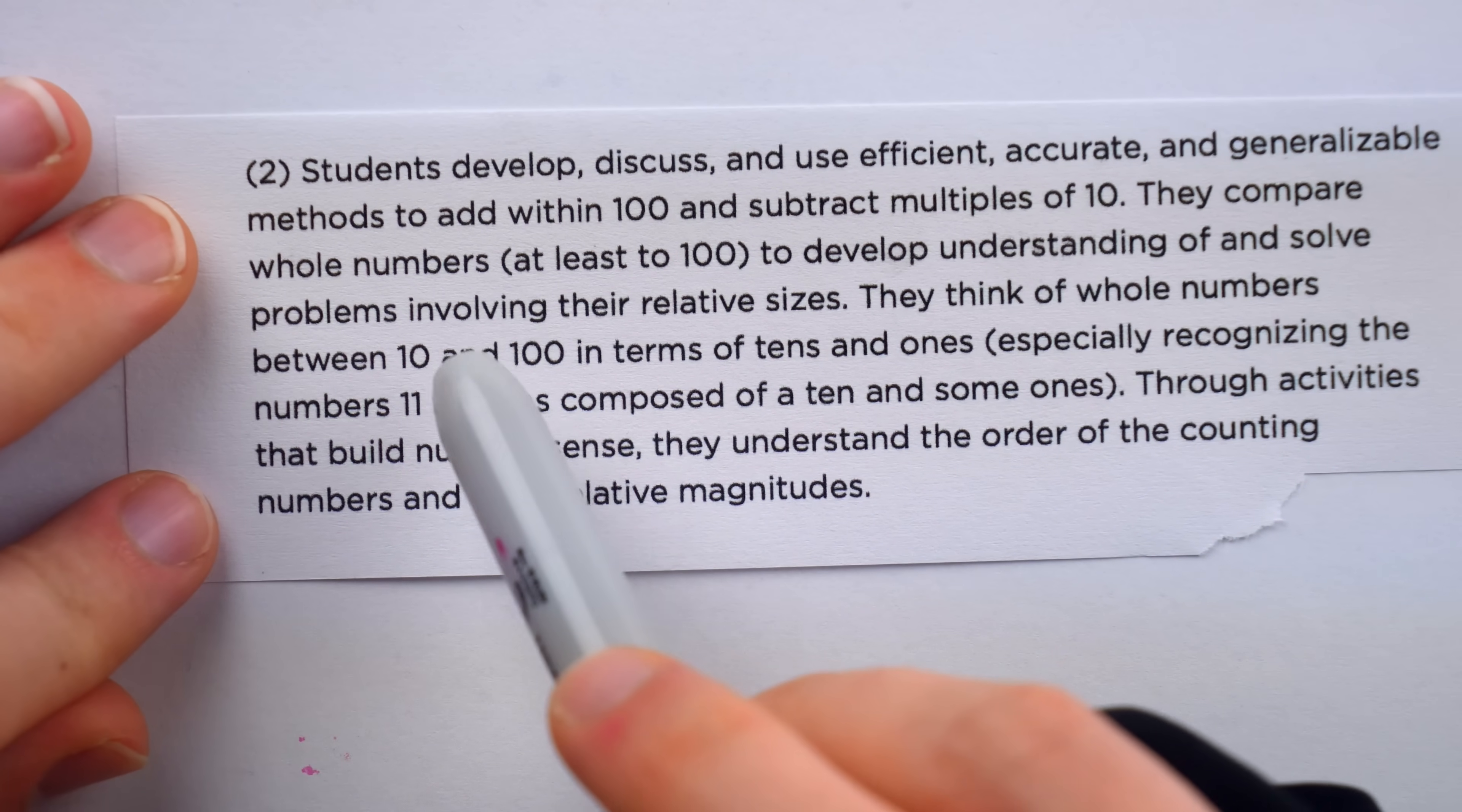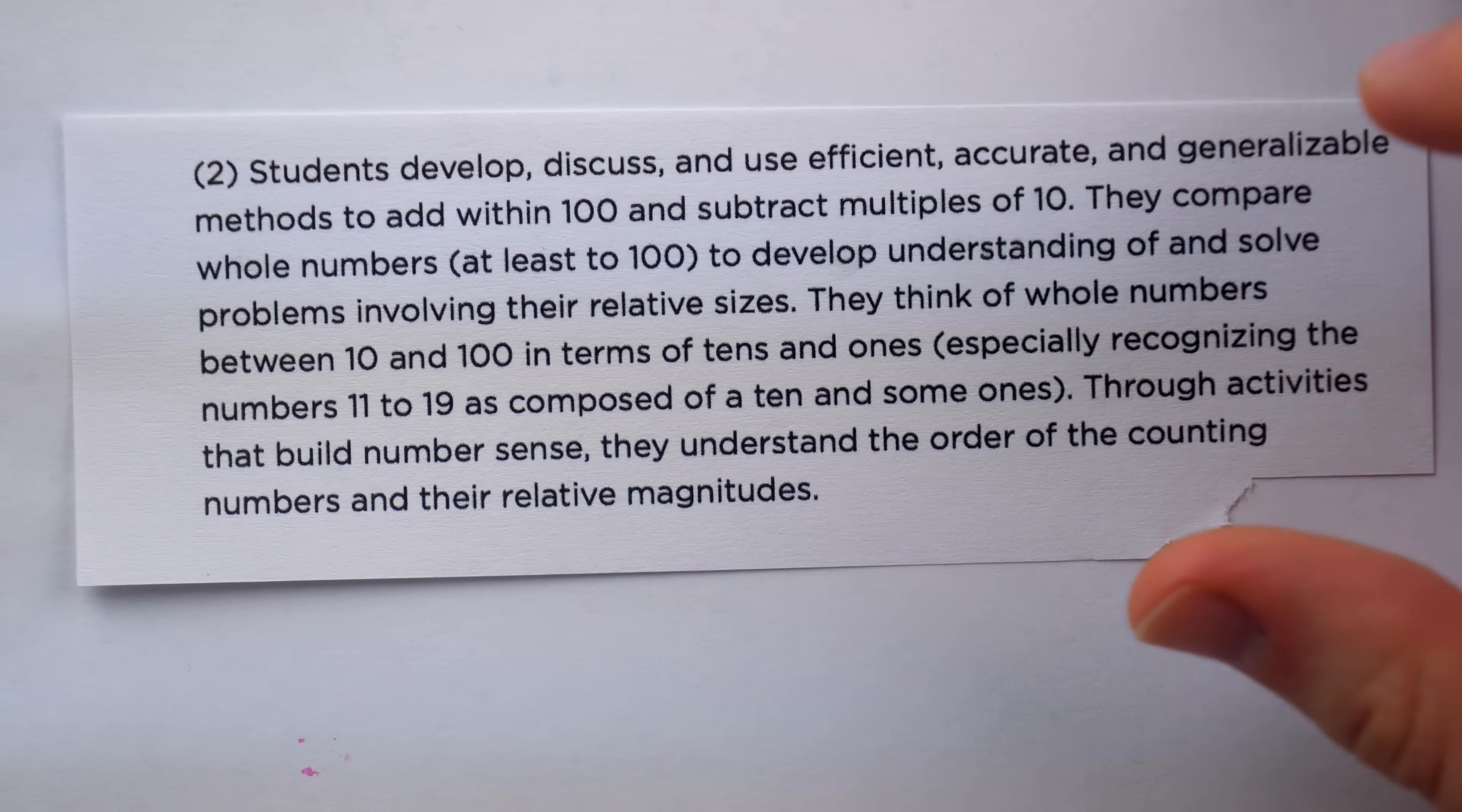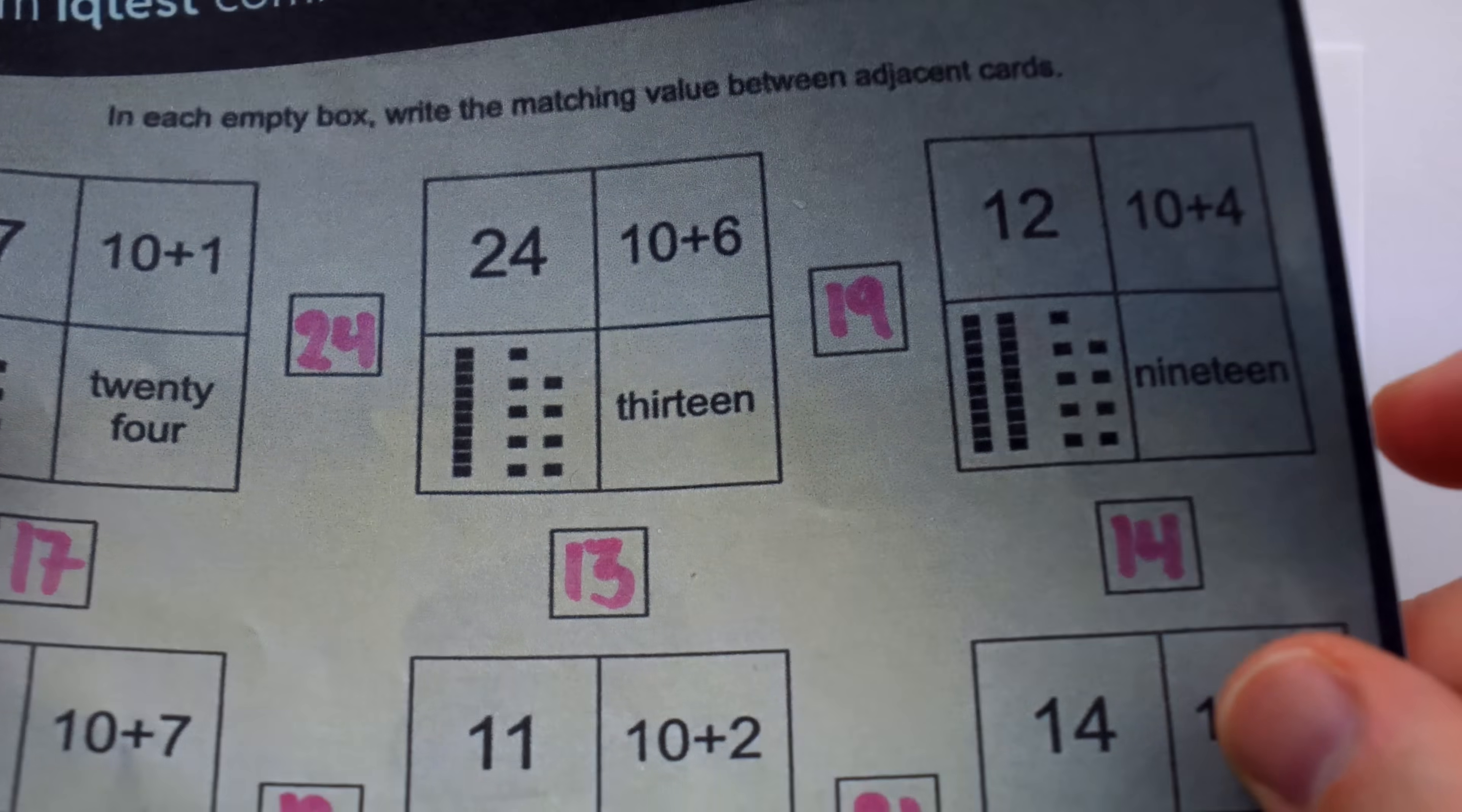This talks about recognizing the numbers 11 to 19 as composed of a 10 and some 1s. So driving home points about the place value, again, base 10 blocks. And this talks about addition with small numbers and using a variety of models, which is what this worksheet is all about.